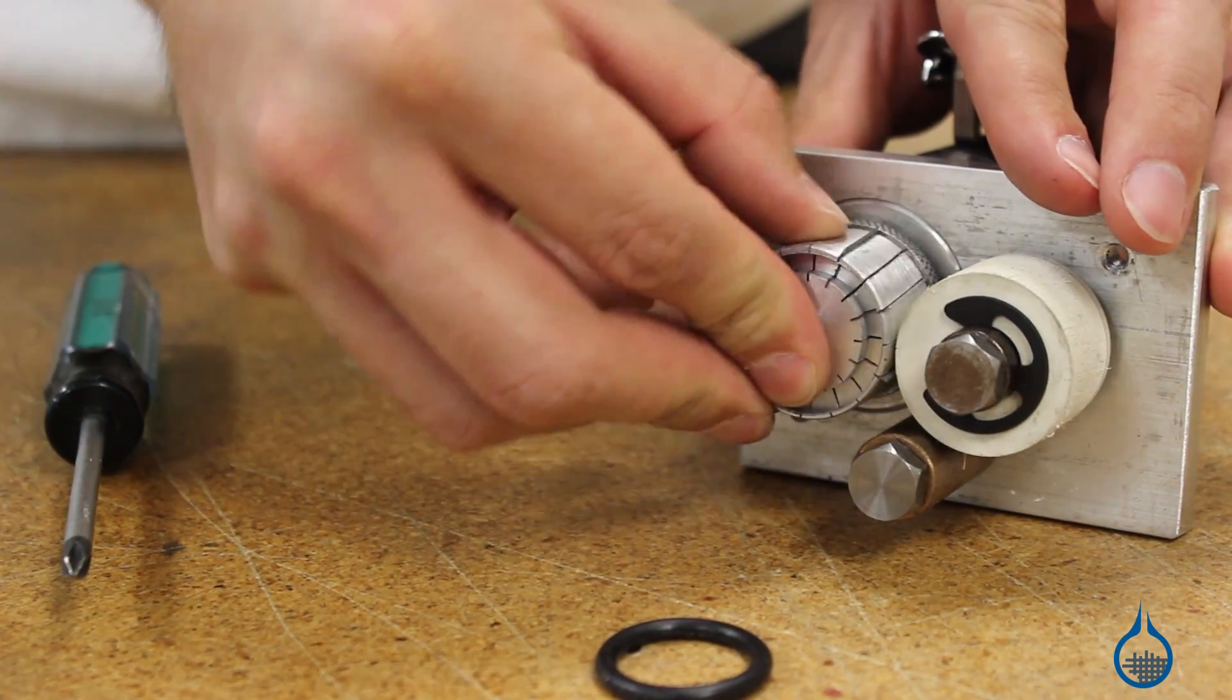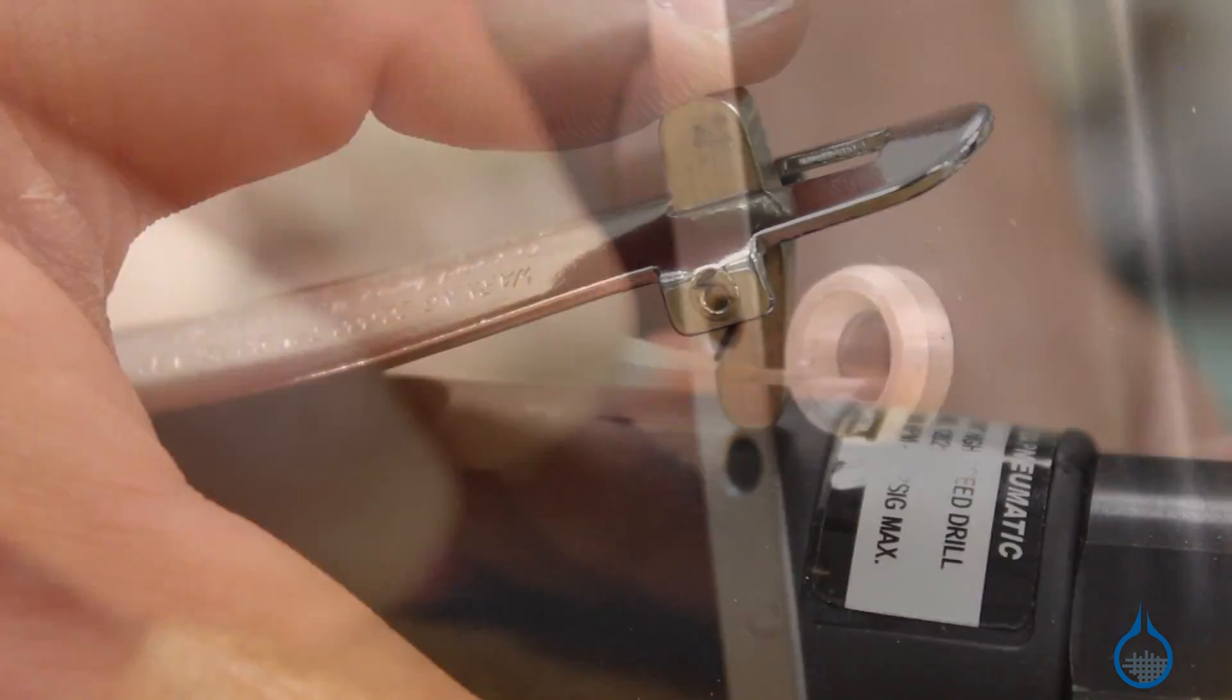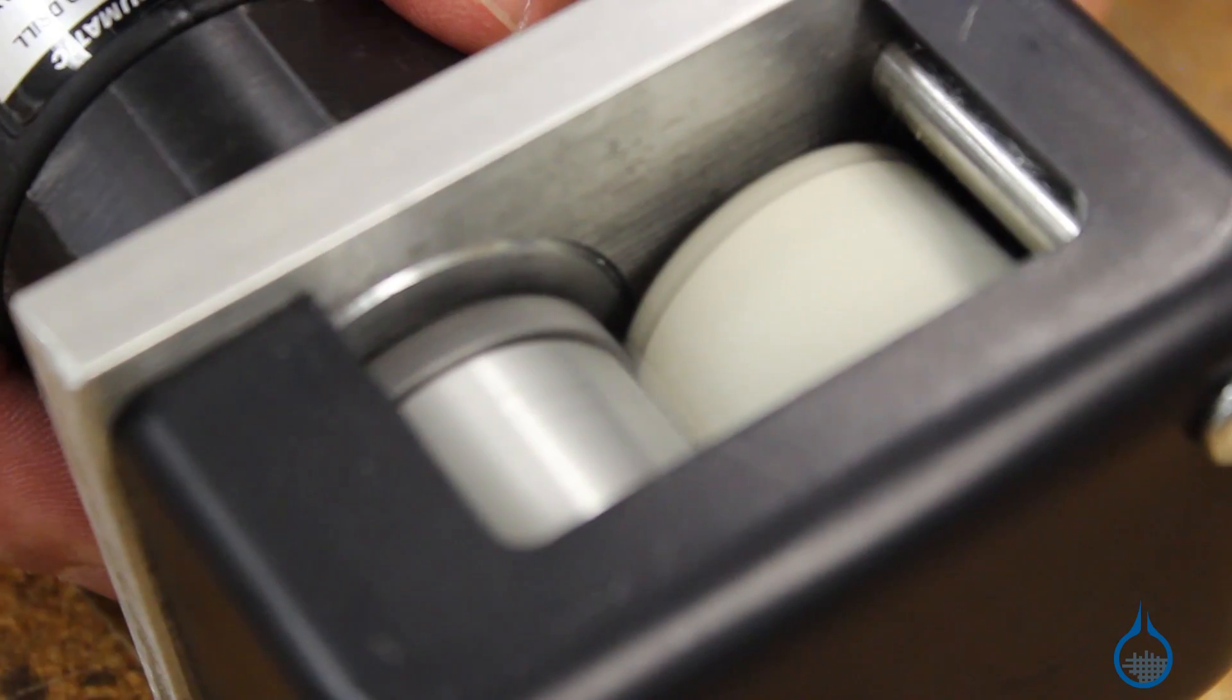The roving is fed into the rear of the gun. The gun then chops the roving into smaller pieces and shoots them out onto the mold.